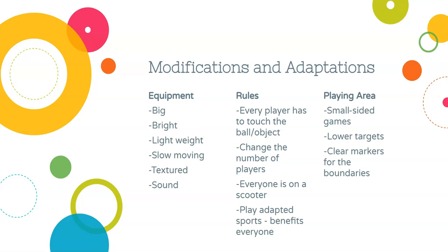Lower your targets — if basketball hoops are at standard height, use a hula hoop hung on the wall or attached to the basketball hoop as a lower target so students can be more successful. Also make sure you've got clear markers for the boundaries. Students with visual impairments may not see a thin line on the gym floor, so place cones or poly spots every couple feet so they can see the boundary clearly.